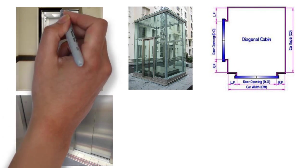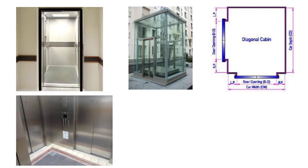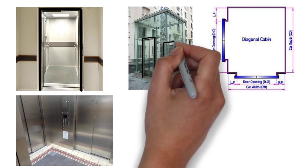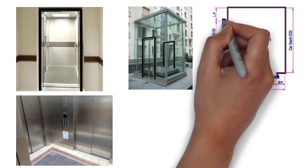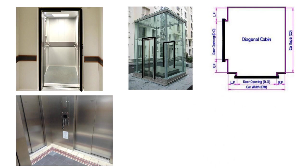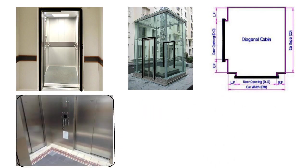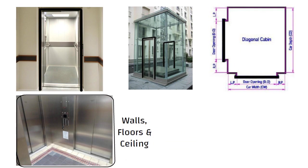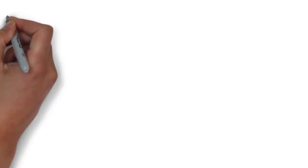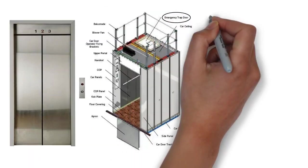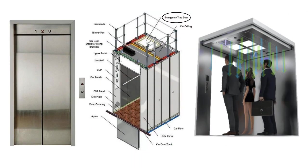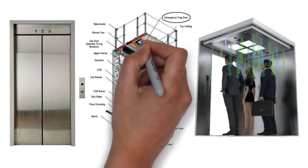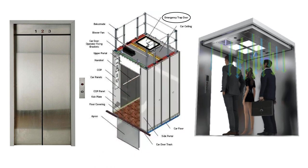One opening cabin has a single entrance. Two opening cabin has two opposite entrances. Angle cabin has two entrances situated at an angle of 90 degrees, and three entrance cabin has three entrances. Elevator cabins shall be completely enclosed by walls, floors, and ceiling. The only permissible openings are the car door, emergency trap door, and ventilation apertures. As seen in this picture, the emergency trap door is placed on top of the elevator car.